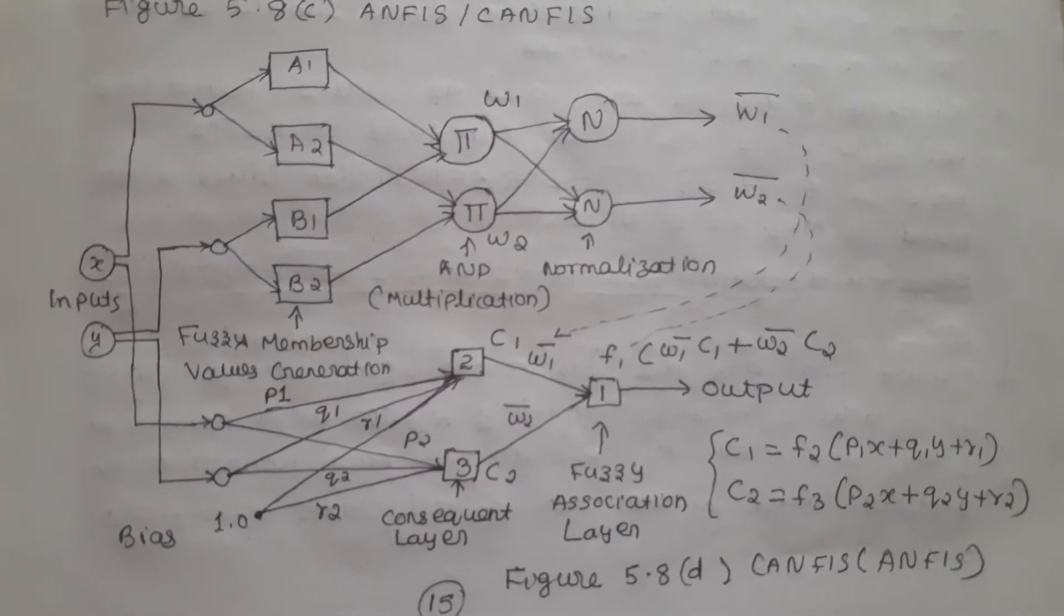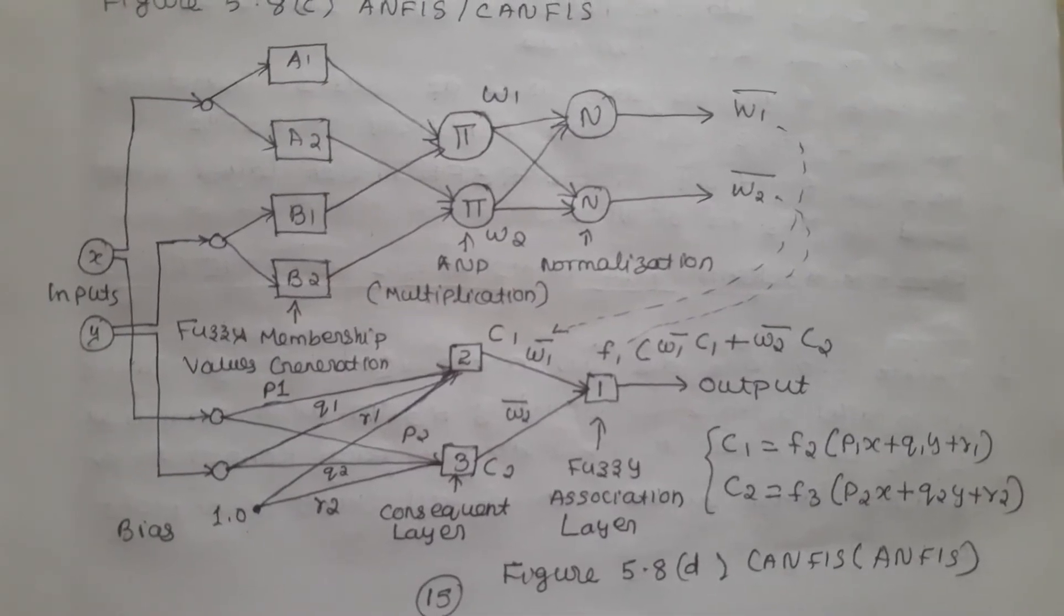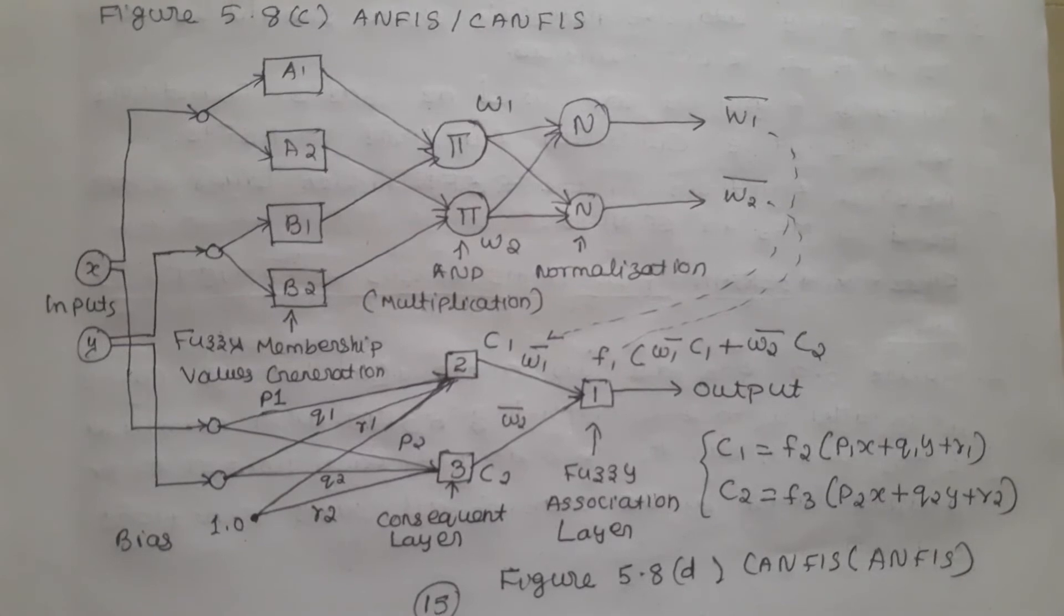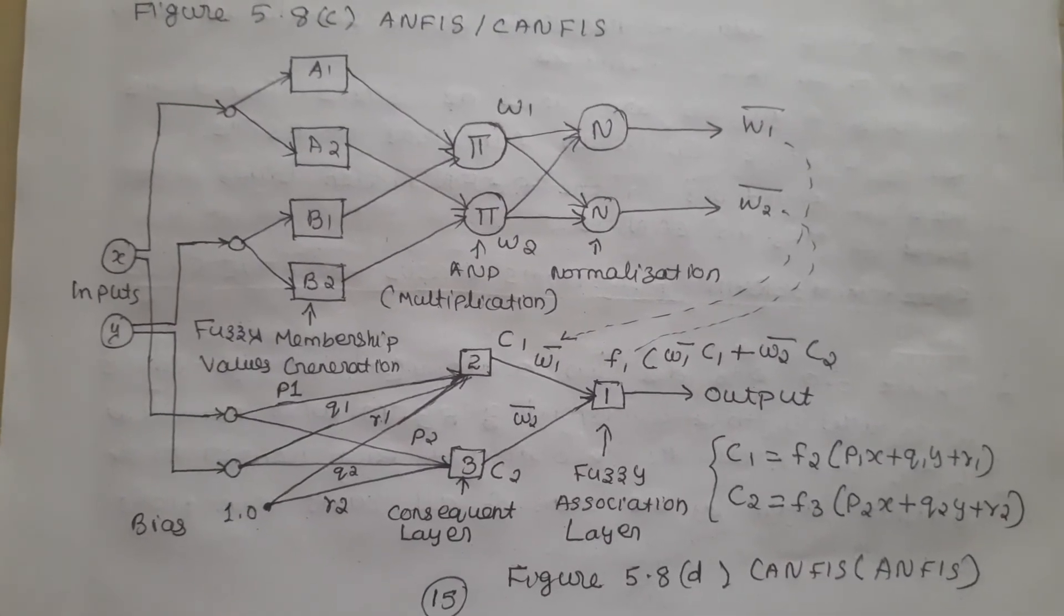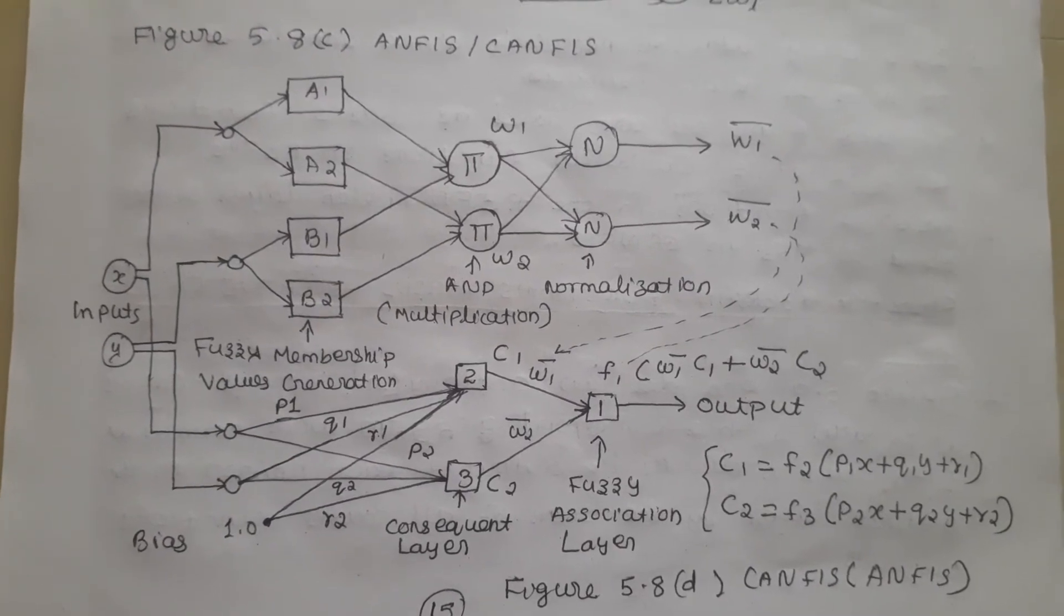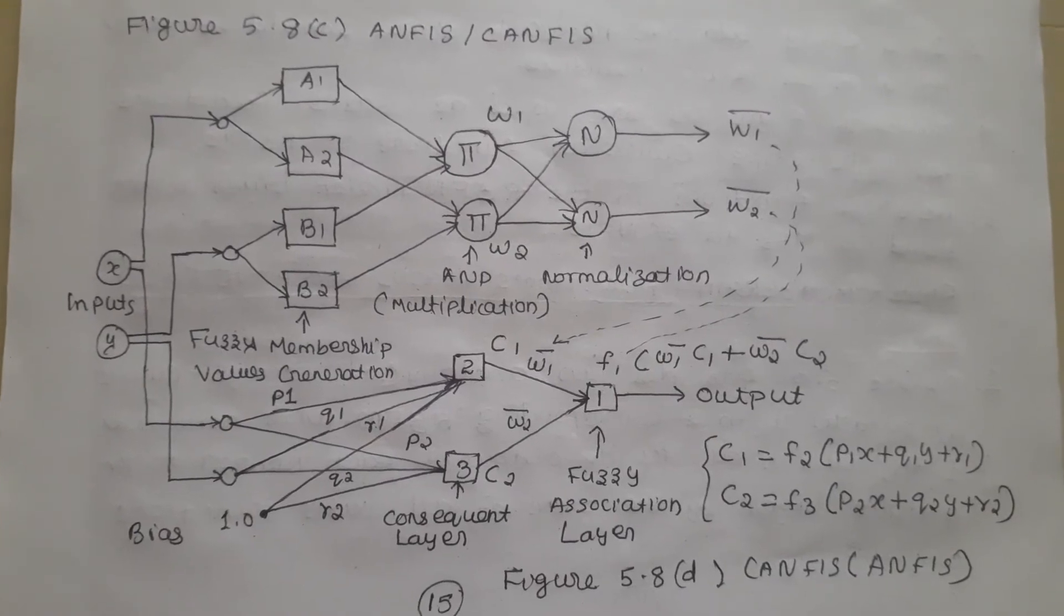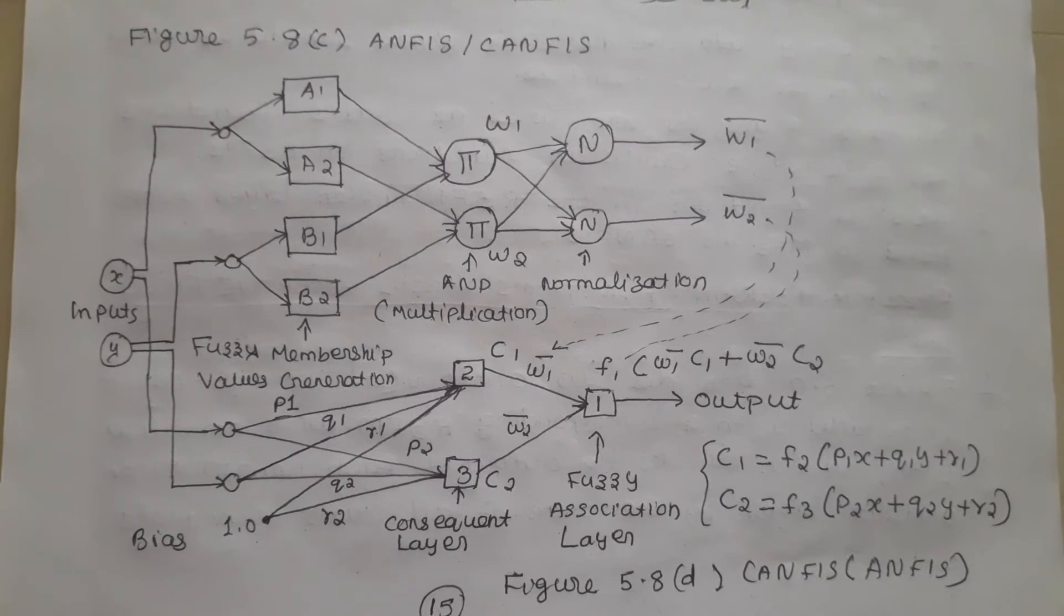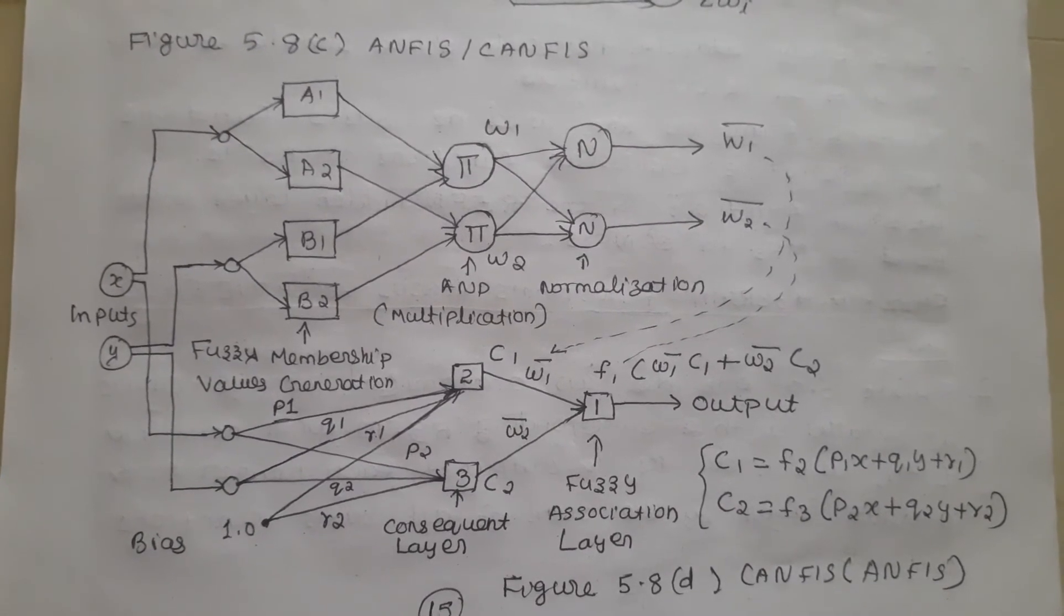Putting more hidden nodes in the multi-layer perceptron is equivalent to adding more rules to CANFIS. The MLP's weights between the output layer and the hidden layer correspond to membership values between the consequent layer and the fuzzy association layer in CANFIS. This comparison emphasizes the inside transparency of CANFIS.